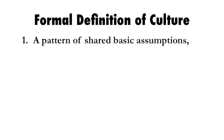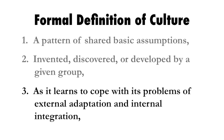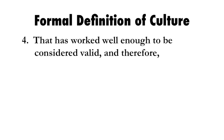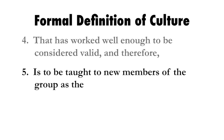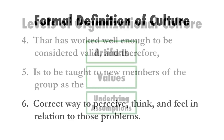Let's turn to the formal definition of culture that Schein offers. It's a multi-part, lengthy definition — you may want to take several passes at it. Culture is a pattern of shared basic assumptions invented, discovered, or developed by a given group as it learns to cope with its problems of external adaptation and internal integration, that has worked well enough to be considered valid, and therefore is to be taught to new members as the correct way to perceive, think, and feel in relation to those problems.